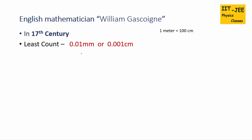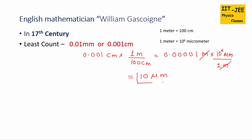You know 1 meter equals 100 cm. So 0.001 cm multiplied by 1 meter divided by 100 cm, that will give us 0.00001 meters. The same way we can convert it into micrometers. 1 meter equals 10 to the power 6 micrometer. We will just multiply it by 10 to the power 6 micrometer divided by 1 meter. So that will give us 10 micrometers. So least count of screw gauge is also 10 micrometer.